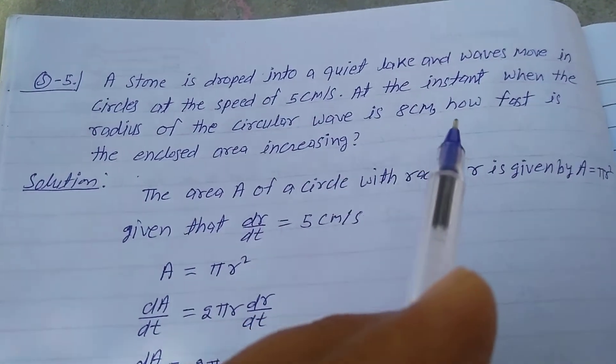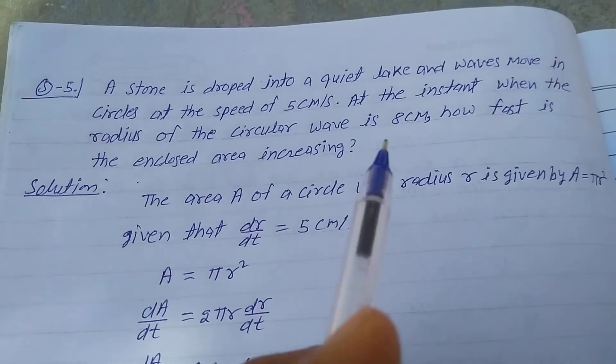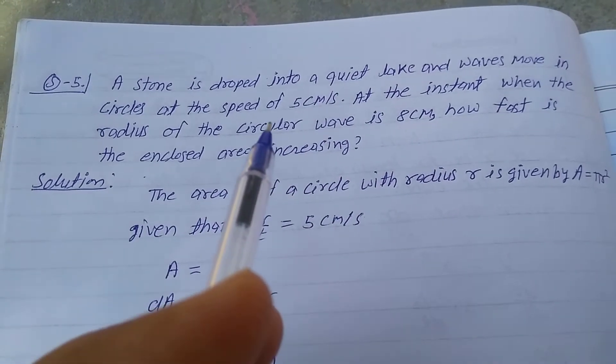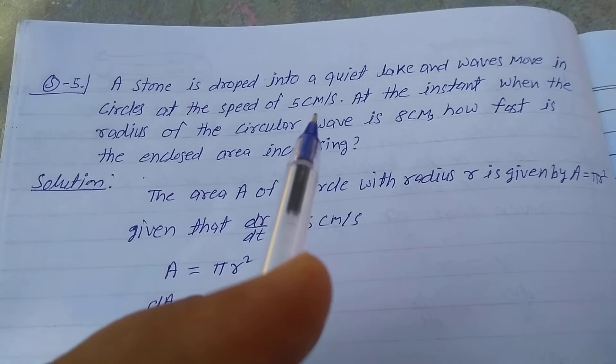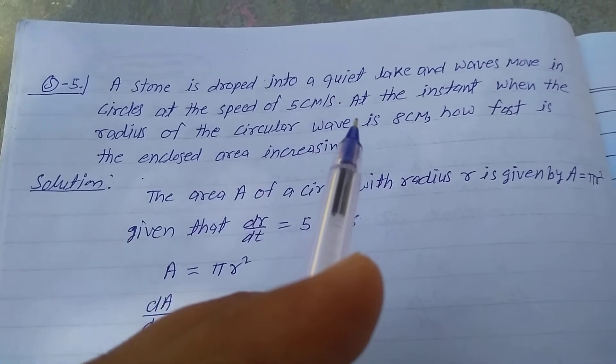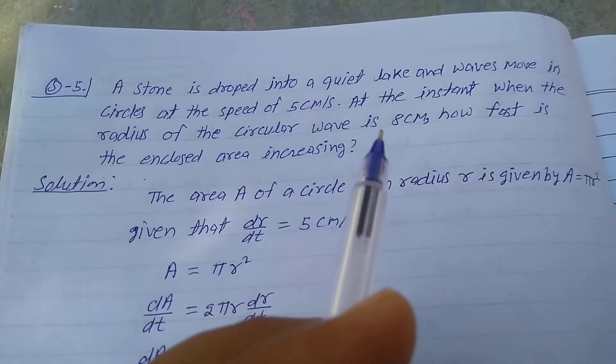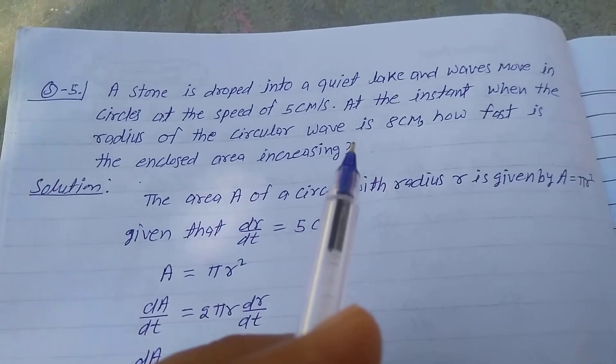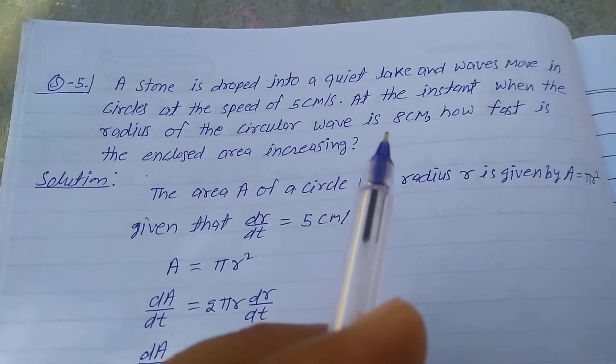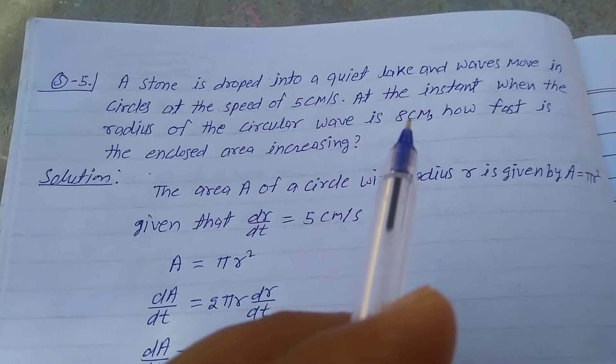The question meaning is: given dr/dt equals 5 centimeters per second, find dA/dt when r is 8 centimeters.